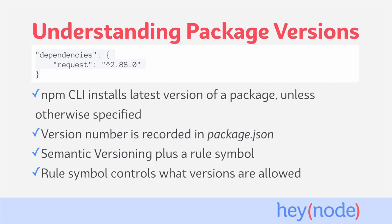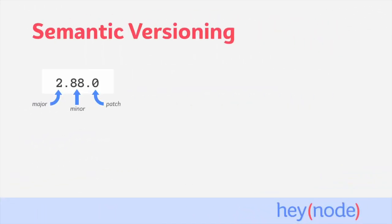Let's take a look at what semantic versioning is. Semantic versioning is a standard used to differentiate between versions introducing major breaking changes, minor backward compatible changes, and smaller patch changes. For a version number of 2.88.0, 2 is the major version, 88 is the minor version, and 0 is the patch version.